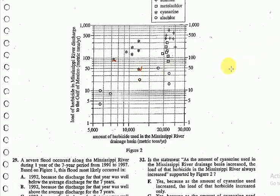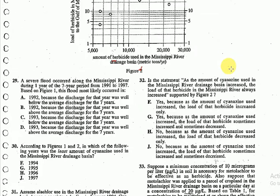So we can ignore F and G. Looking at H and J: H states that the load of herbicide decreased only, which is not true because it sometimes increased as well. So we're left with only option J.